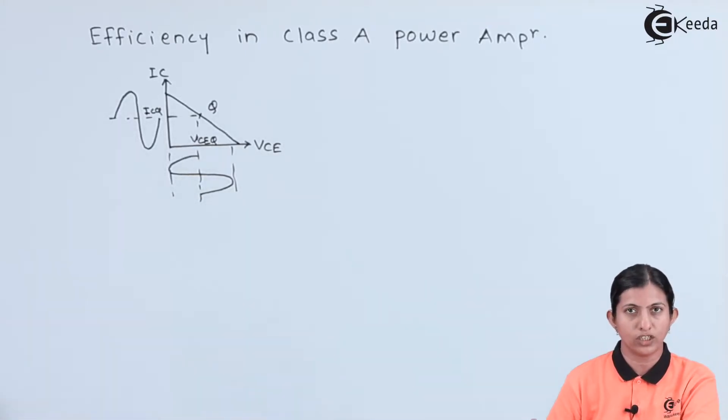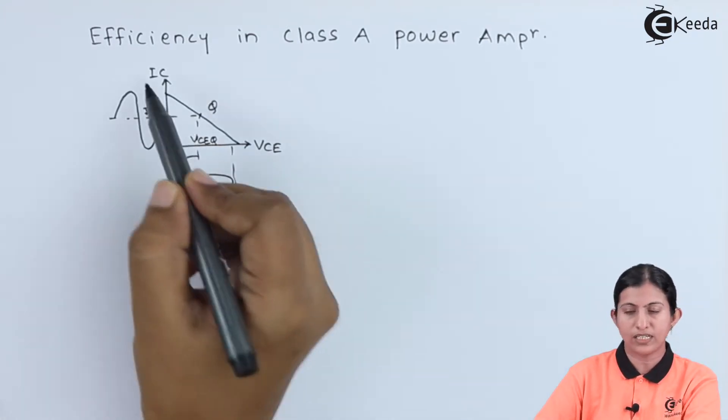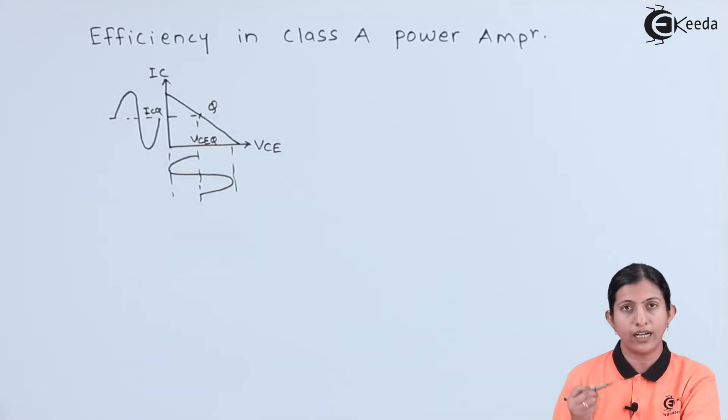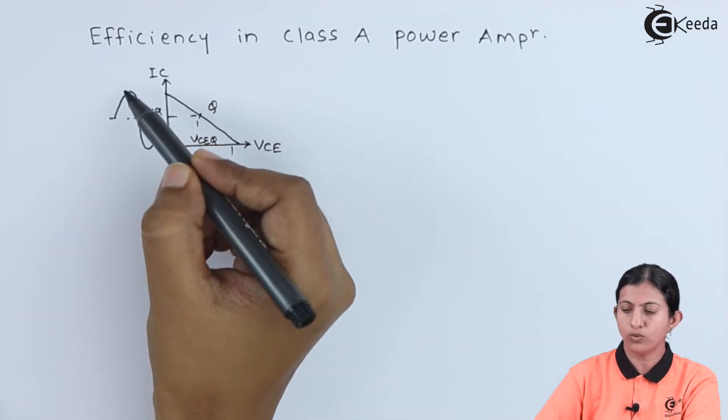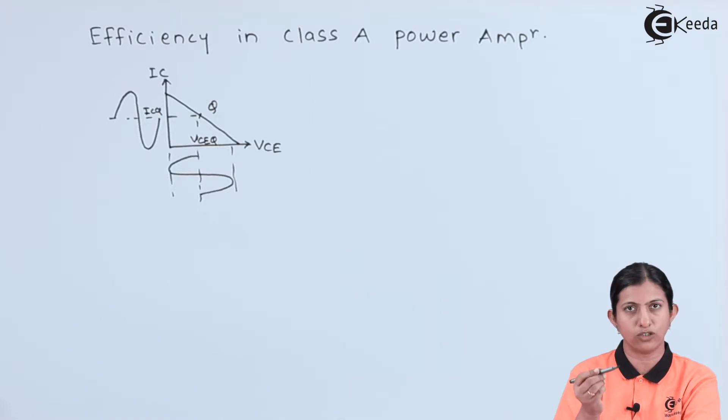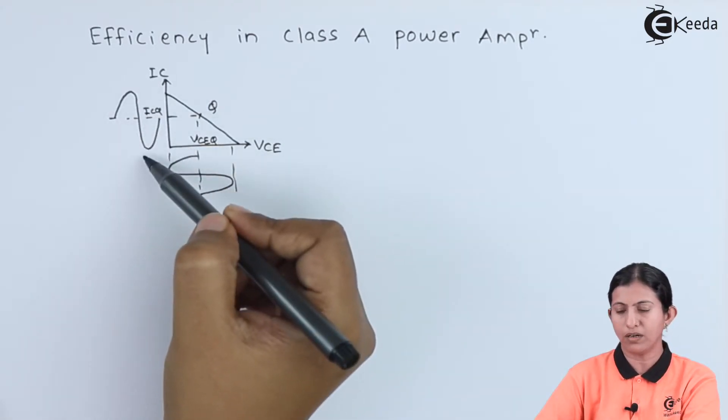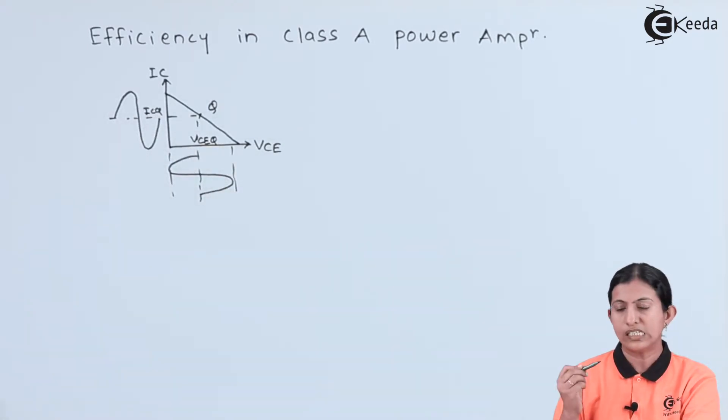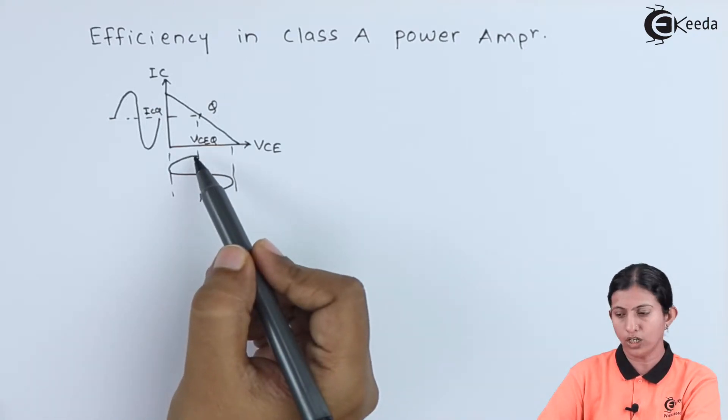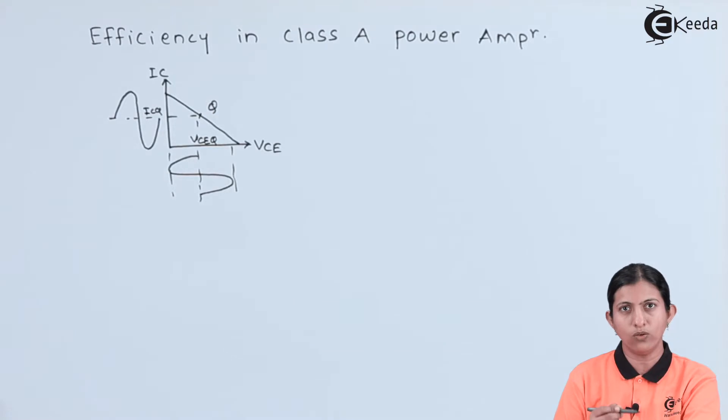This is the AC load line variations in class A power amplifier when we consider the transformer coupled amplifier. It is a graph of VCE versus IC. The current will change from quiescent point to the maximum in saturation region to the minimum in cutoff region. Similarly, VCE will change from its quiescent point to the minimum value and then to the maximum value, up to voltage VCC.